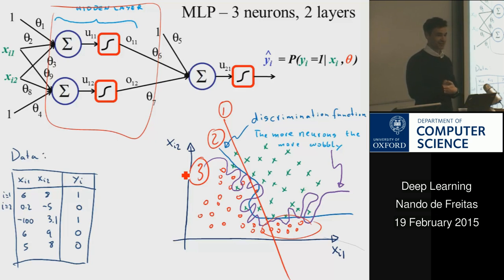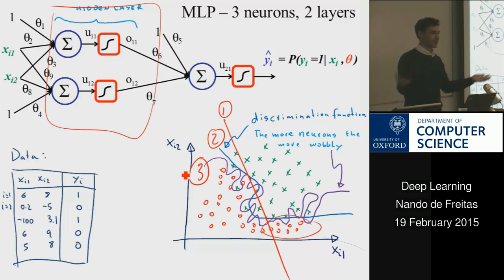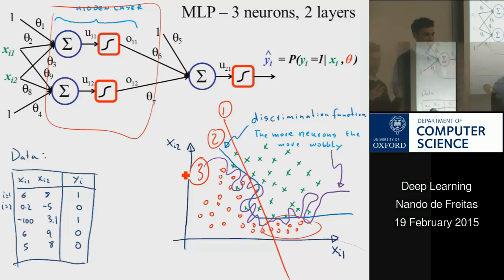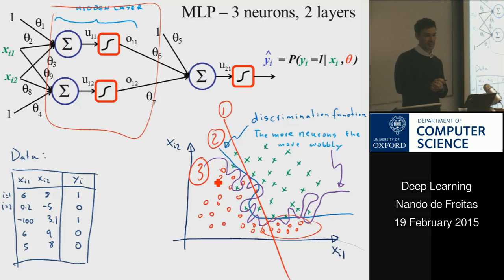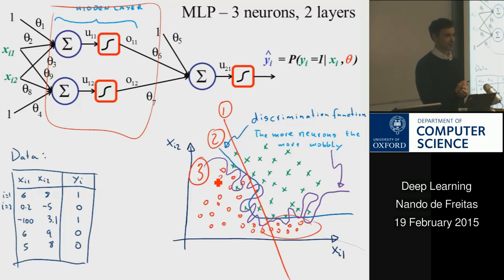Can you suggest two ways that would allow me to select among option one, option two, or option three as the separating discriminant functions? Going back to polynomials — what made polynomials more or less complex? The degree of the polynomial. So here, what would be equivalent to increasing the degree of the polynomial? The number of neurons — exactly. If I have more neurons, I will get a more complex function.